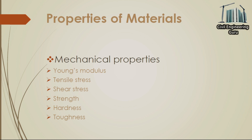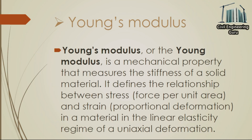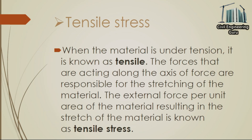Now moving toward properties of materials. Young's modulus is a mechanical property that measures the stiffness of a solid material. It defines the relationship between stress (force per unit area) and strain (proportional deformation) in a material in the linear elasticity regime of a uniaxial deformation. Tensile stress: when the material is under tension, the forces acting along the axis of force are responsible for the stretching of the material. The external force per unit area of the material resulting in the stretch is known as tensile stress.